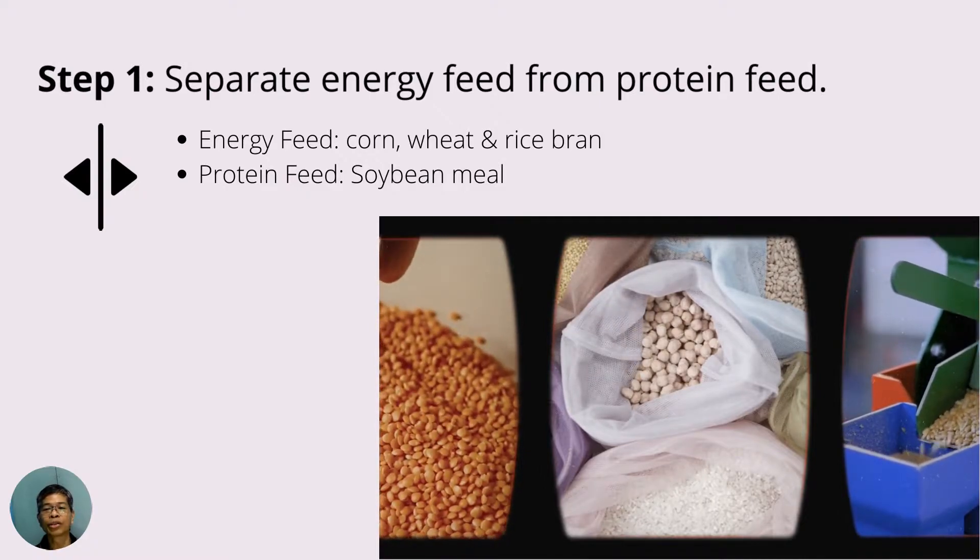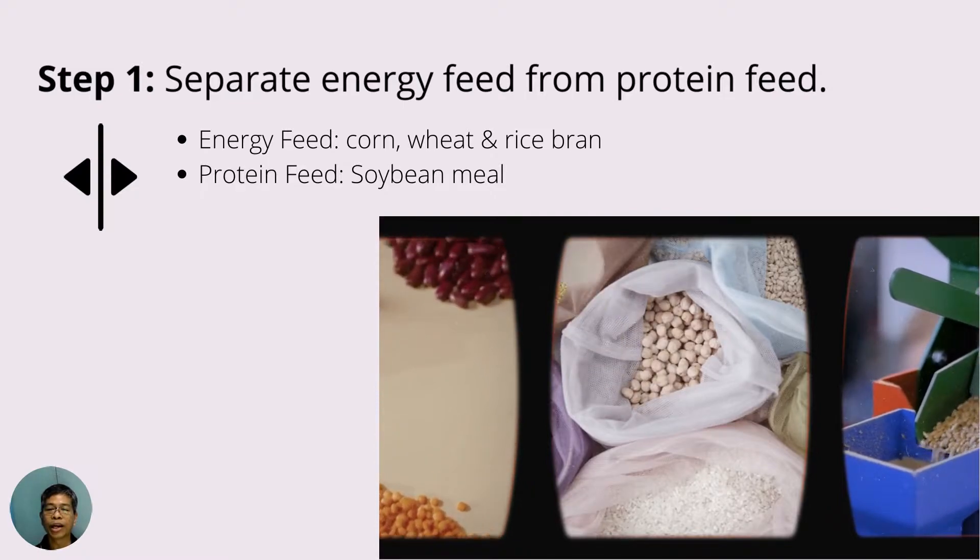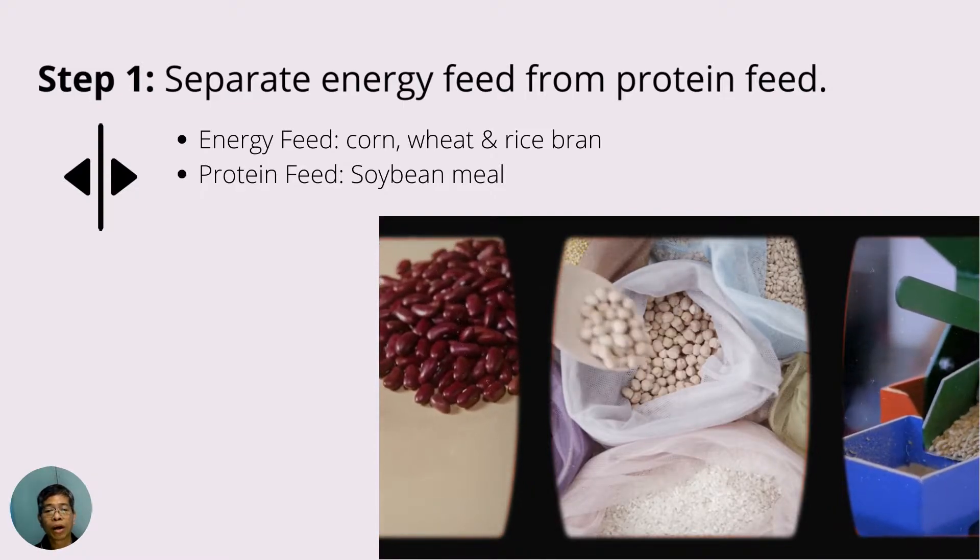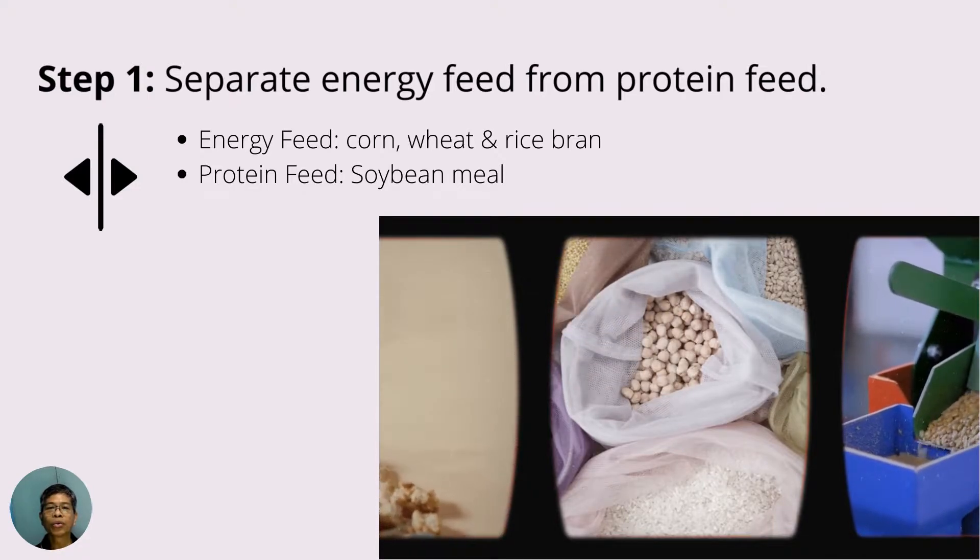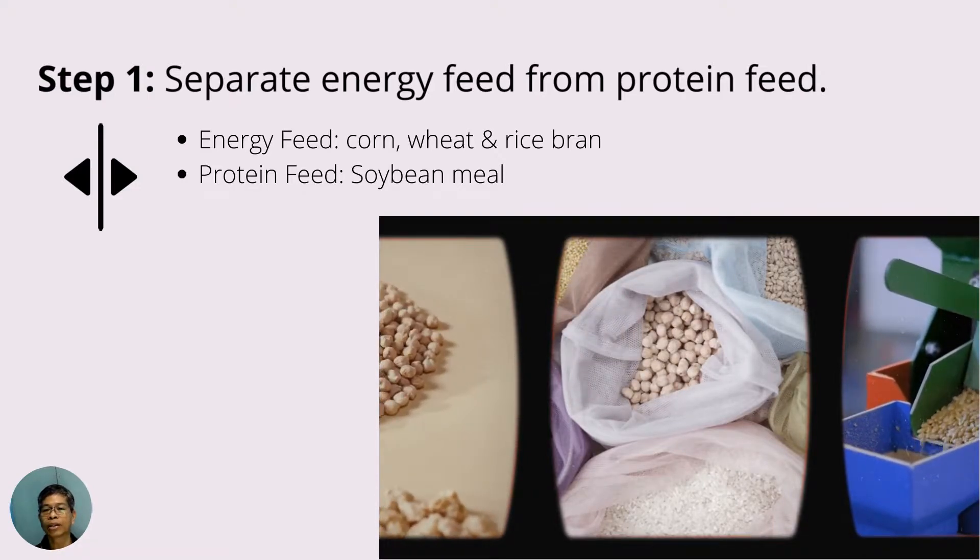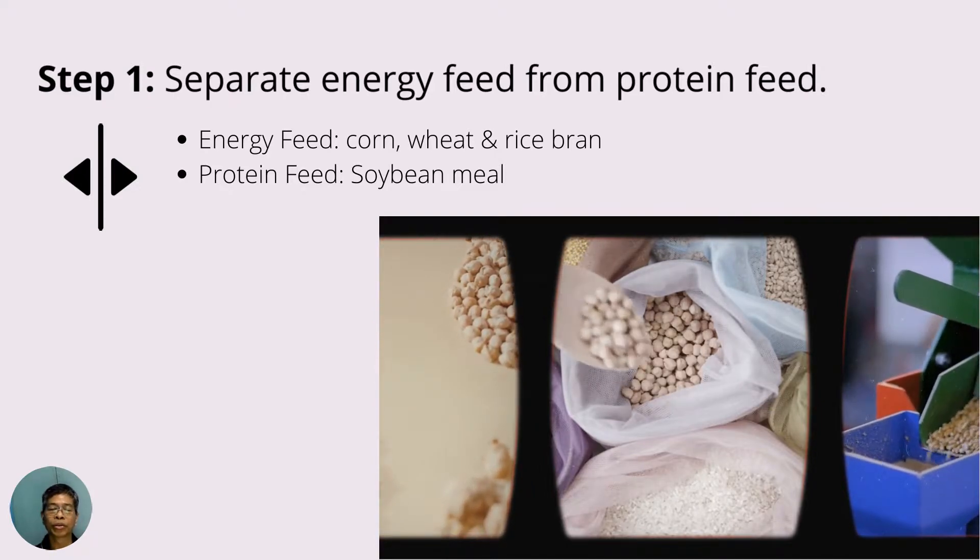The first step is to separate the feed ingredients into two groups, namely, energy feeds and protein feed. Corn, wheat, and rice bran goes to the energy group, while soybean meal to the protein group.